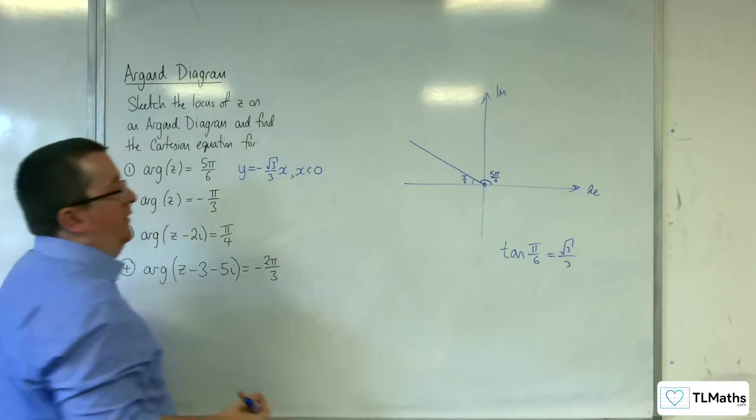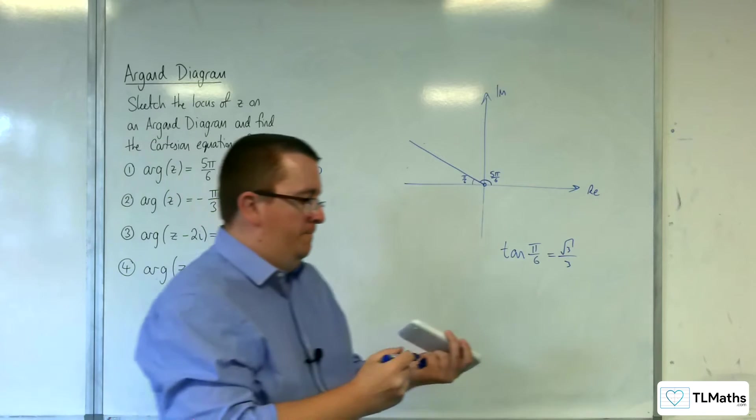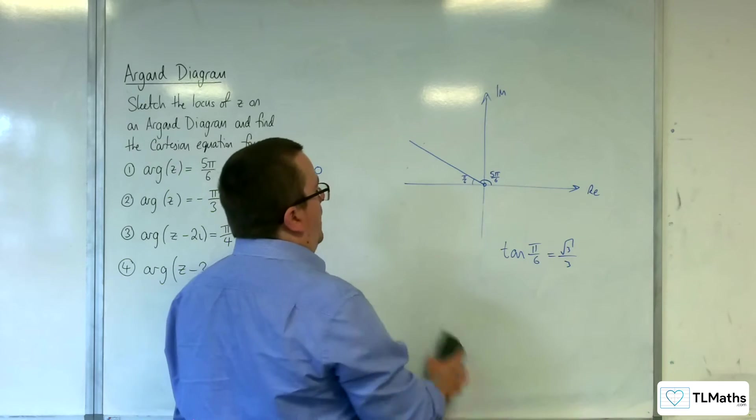where x, in this case, is less than 0. And so, that would be the equation of my half line.